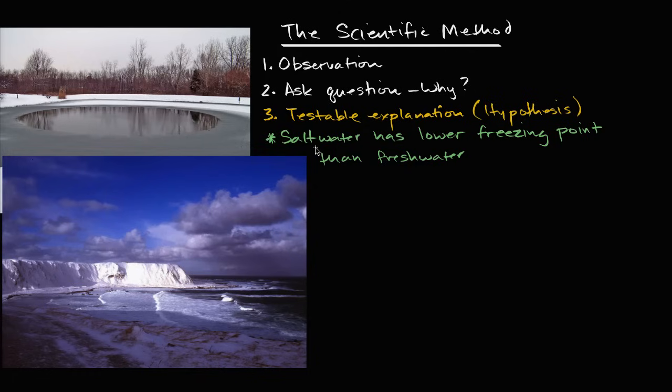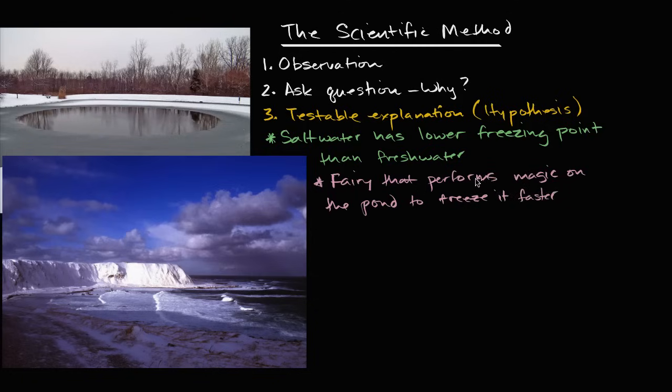Now what would be an example of a bad hypothesis, or something that you couldn't even necessarily consider as part of the scientific method? You could say that there is a fairy that performs magic on the pond to freeze it faster. The reason why this isn't so good is that this is not so testable, because it's depending on this fairy, and you don't know how to convince the fairy to try to do it again, you haven't seen the fairy, it's not based on any observation, and so this would not be a good hypothesis for the scientific method.